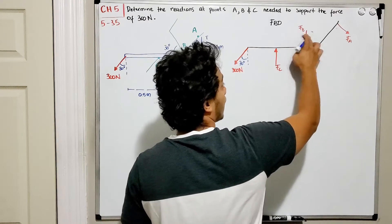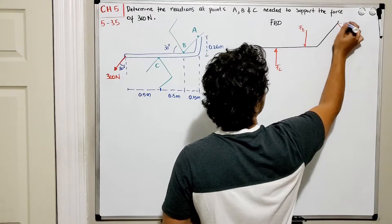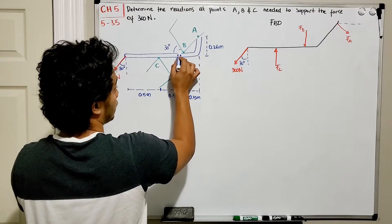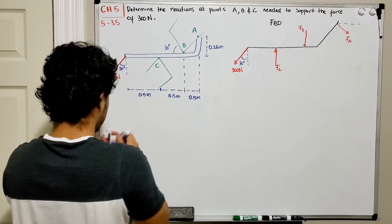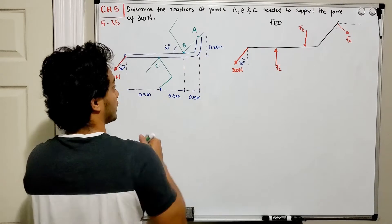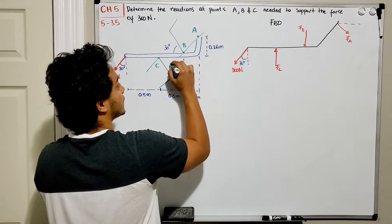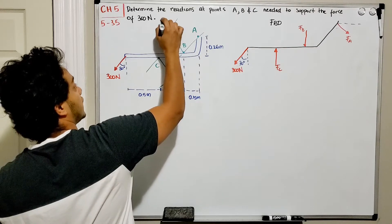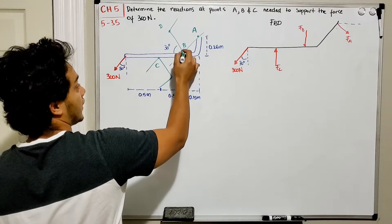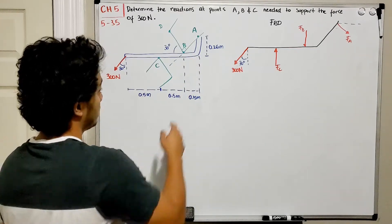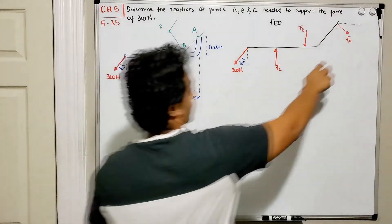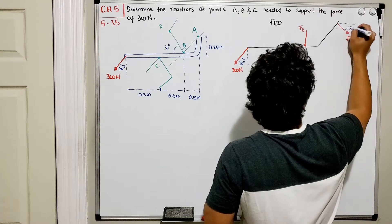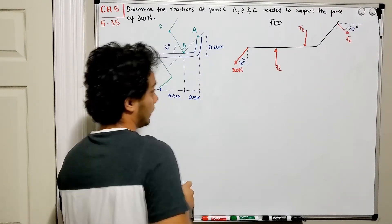What is the angle of FA with respect to the X axis? If we check our diagram, we have a 30-degree angle with respect to the X axis, and FA is normal to that surface. If we extend the surface from point B to a point D, there is a 90-degree angle between that line and the AB line. So this 30-degree angle tells us that our force FA with respect to the X axis is also at 30 degrees.